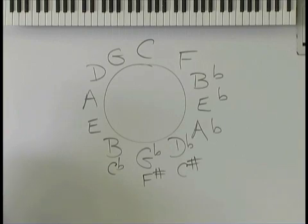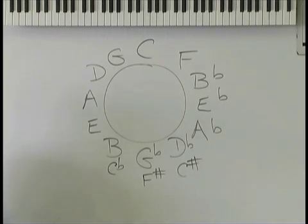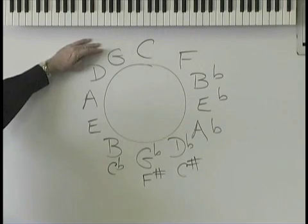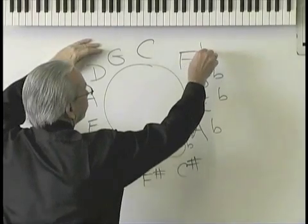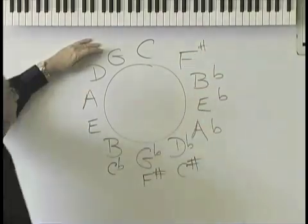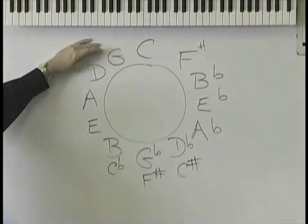Let's go to the left. Key of C has no sharps and no flats. Key of G — one sharp. It's a backwards clock. The name of the sharp is F-sharp. So you just go over to the F and that's where you start. In your head, just make a little sharp sign.